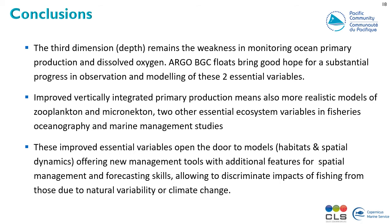In conclusion, the third dimension — depth — remains the weakness in monitoring ocean primary production and dissolved oxygen. Argo BGC floats should bring more information and data on these two essential variables. Improved vertically integrated primary production means more realistic models of zooplankton and micronekton — other essential ecosystem variables for fisheries, oceanography, and marine management. These improved essential variables open the door to models of habitat and spatial dynamics, offering new management tools, spatial management features, forecasting skills, and the ability to discriminate the impacts of fishing from those due to natural variability and climate change.